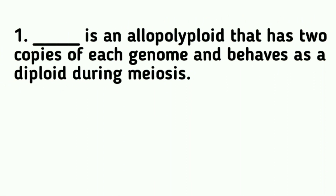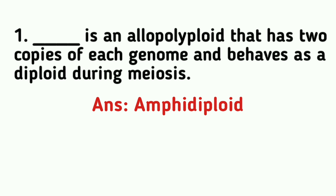An allopolyploid has two copies of each genome and behaves as a diploid during meiosis. It is known as an allopolyploid.